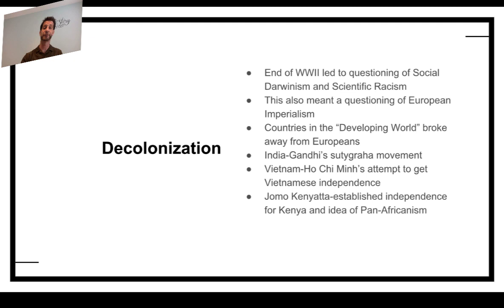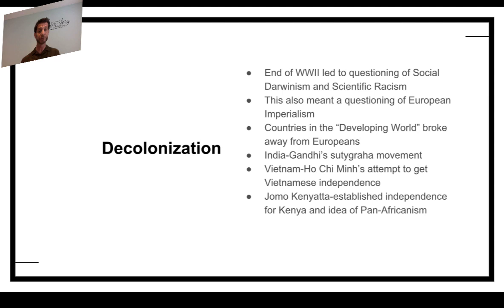At the end of World War II, alongside the questioning of technology, there was also a questioning of European imperialist belief systems like social Darwinism and scientific racism. Countries in the developing world broke away and declared their right to sovereignty. In India, Gandhi's Satyagraha movement called for nonviolence and a middle ground between British imperialism and isolation, envisioning India as an agricultural country that would industrialize. In Vietnam, Ho Chi Minh adopted communism to gain independence — first from the French, then from the Americans. In Africa, Jomo Kenyatta established independence for Kenya and called for pan-Africanism — uniting all Africans to gain independence.